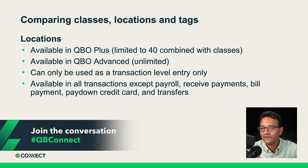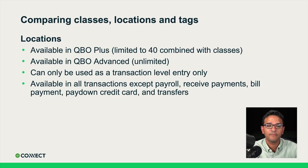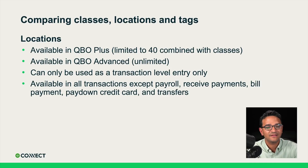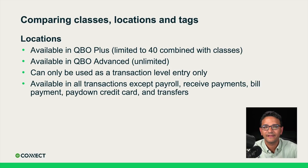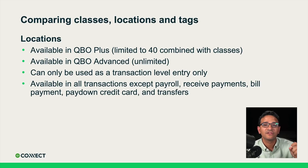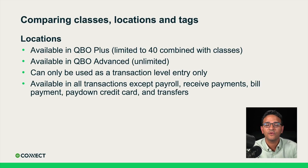Let's talk about locations. Locations work very similarly to classes and have a limit of 40 combined with classes in Plus. With QuickBooks Online Advanced, you have unlimited locations. The main difference is that locations cannot be used at the line item level — they can only be used at the transaction level. Locations are available in all transactions except payroll, receive payments, bill payments, paid on credit card, and transfers. Importantly, locations allow you to do a balance sheet by location — you cannot do that with classes.